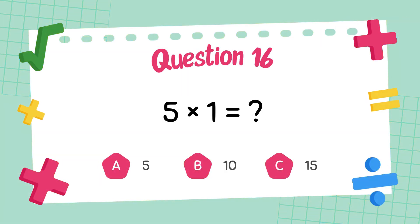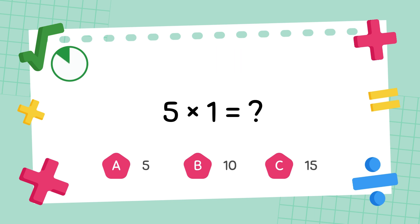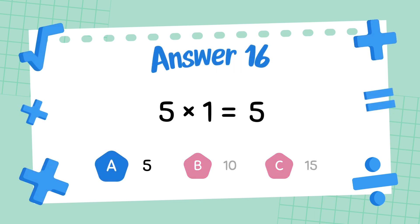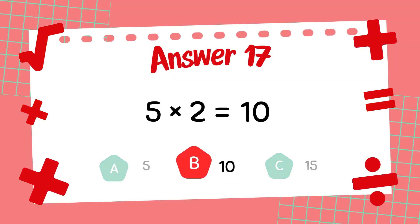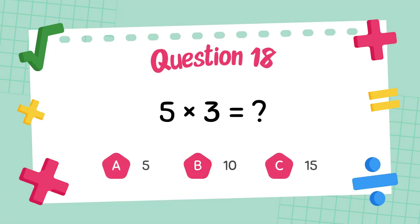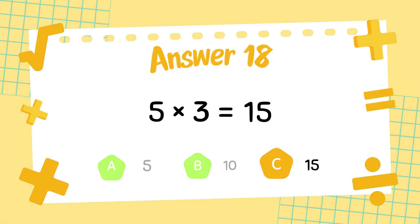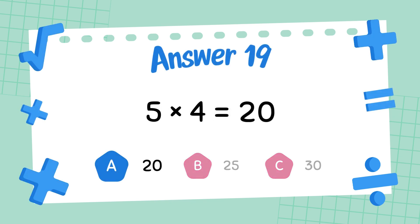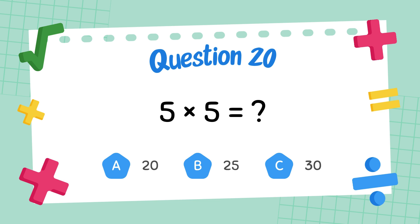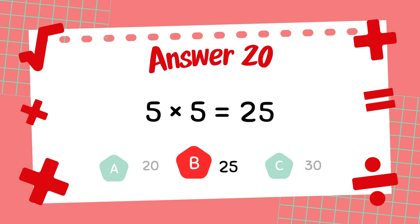What is 5 times 1? The answer is 5. What is 5 times 2? The answer is 10. What is 5 times 3? The answer is 15. What is 5 times 4? The answer is 20. What is 5 times 5? The answer is 25.